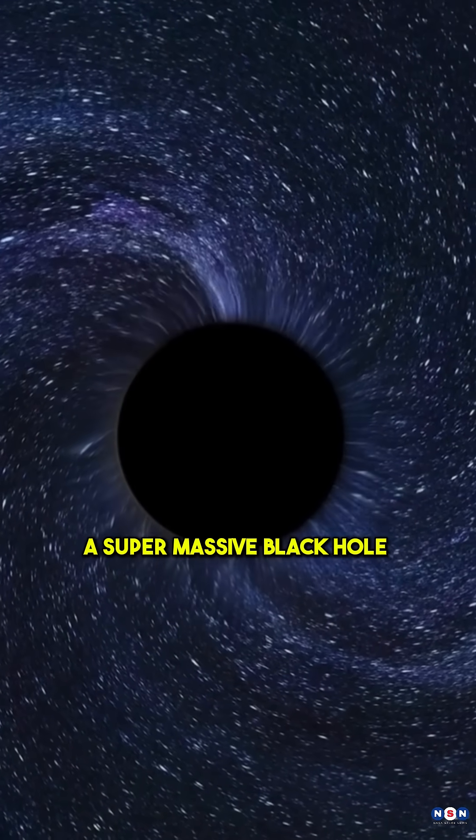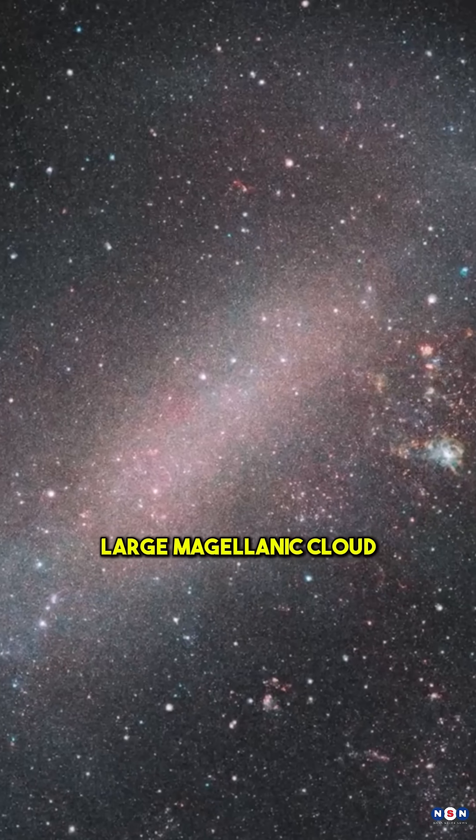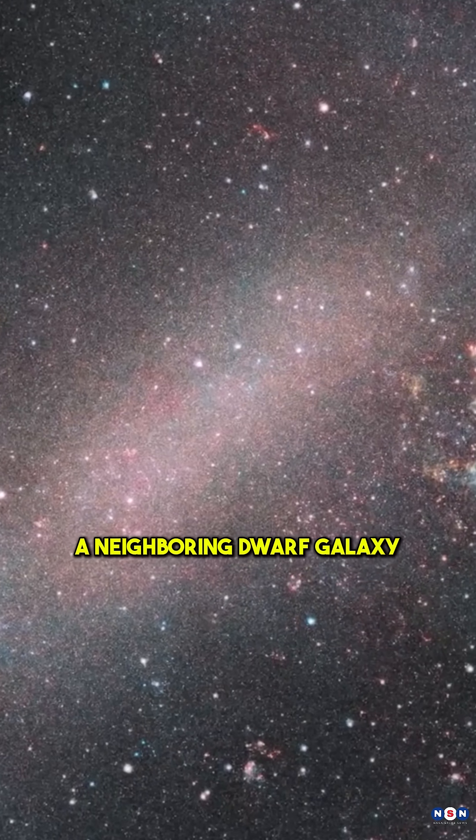A supermassive black hole is on a collision course with the Milky Way. Hidden deep in the Large Magellanic Cloud, a neighboring dwarf galaxy, this black hole is estimated to be 600,000 times the mass of the sun.